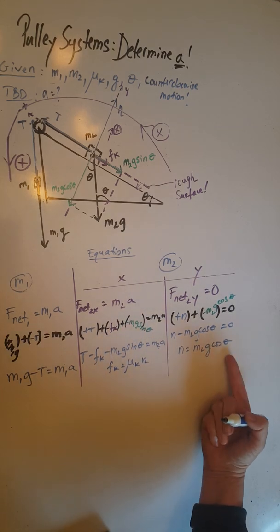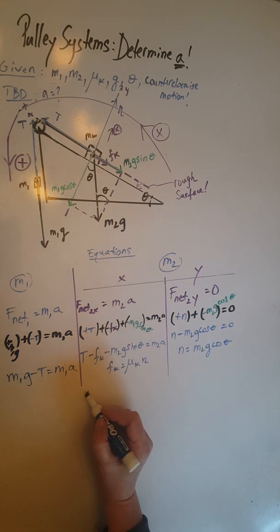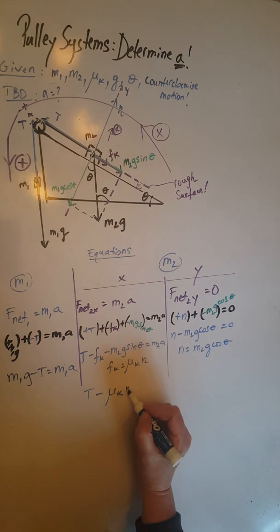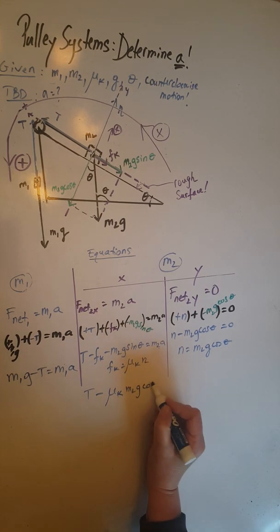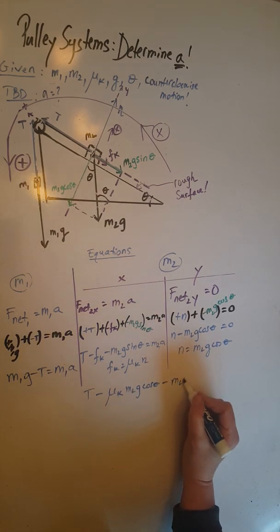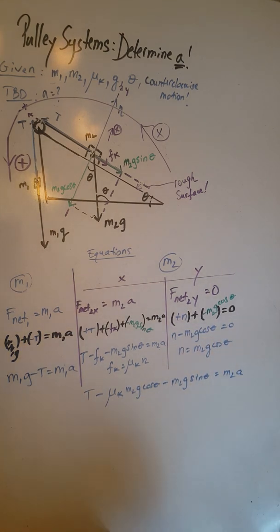And N is m2g cosine theta. When we plug this in here and then in here, we are going to end up having the equation T minus mu k m2g cosine theta minus m2g sine theta equals m2a.